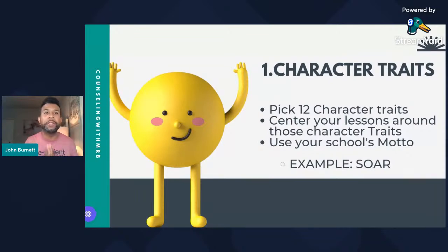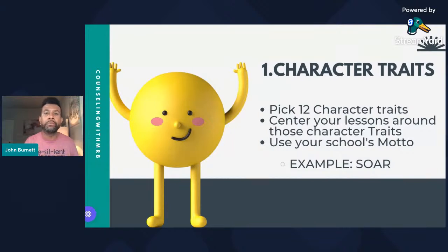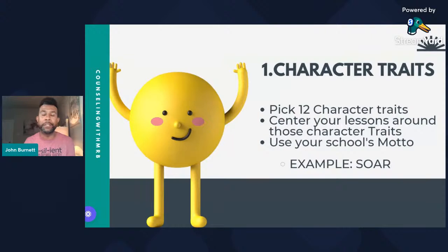Let's dive into our first way of creating classroom counseling lessons: you can start with character traits. This is the easiest approach. You pick 12 character traits — one for each month of the year — and center your lessons around those traits. Or you can use your school's model. For example, if you're a PBIS school with a behavior matrix, ours is SOAR: Safety, Ownership, Achievement, and Respect. You can tailor lessons around your school's motto.